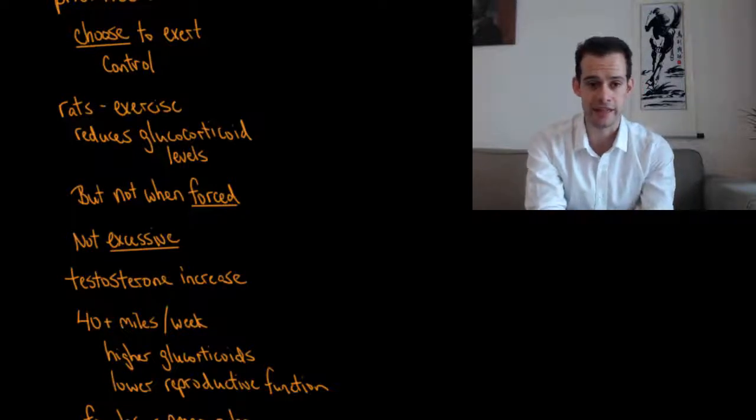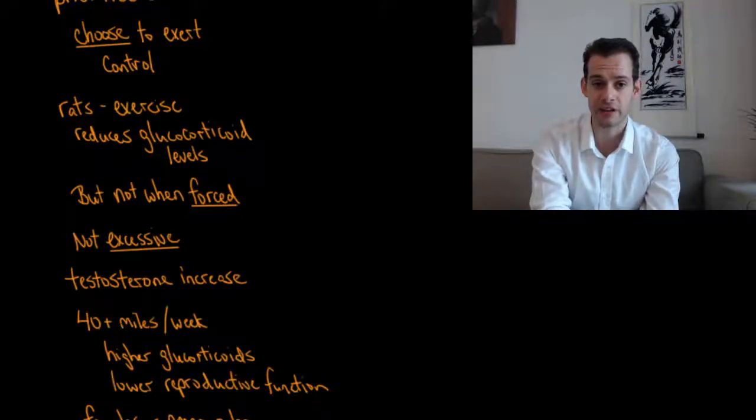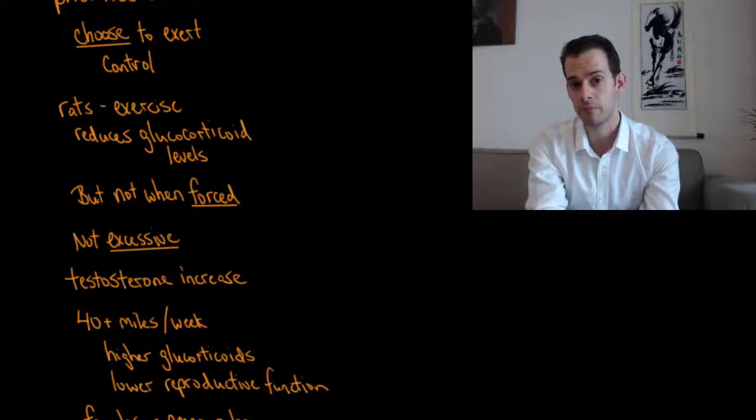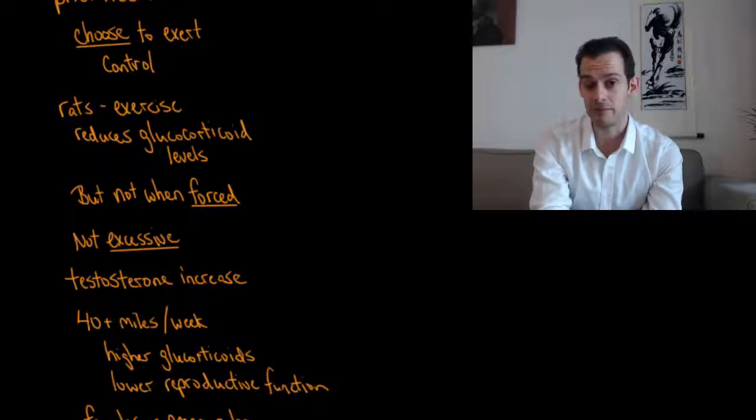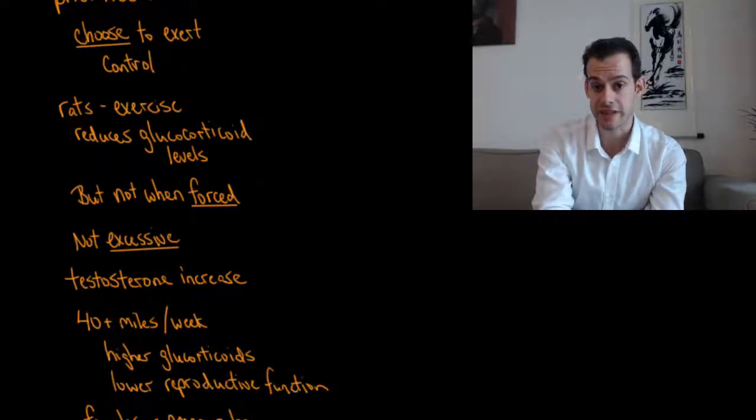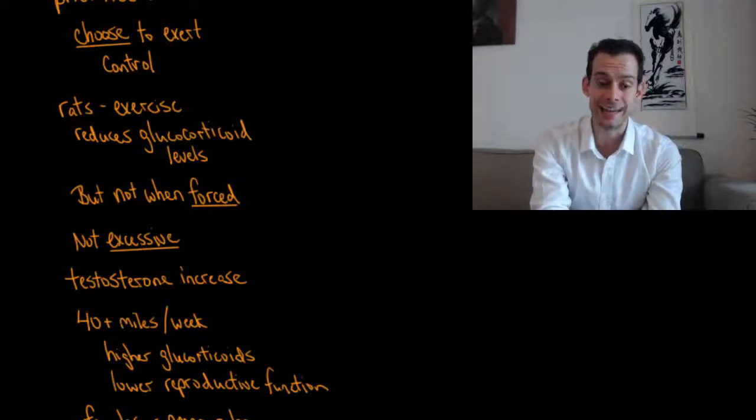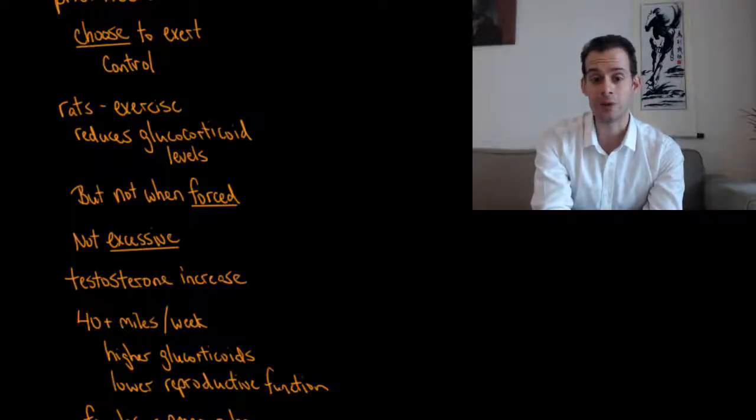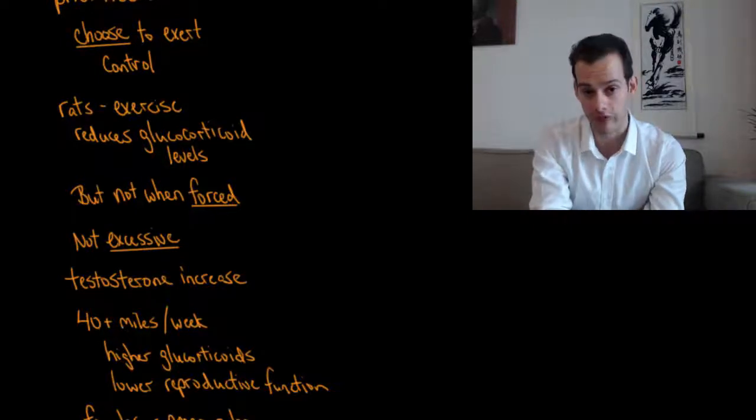It's important here that I say we choose to exert control. We choose to exercise. In rats, we can see that exercise can reduce levels of glucocorticoids, those stress hormones. But this isn't the case if the rats are forced to exercise. You can give a rat a wheel, they can choose to run, and you can see how much time they spend exercising. This is associated with reduced glucocorticoid levels. But then you take another rat and you force it to do the same amount of exercise. When you do this, you can actually see increases in stress in the rat that was forced to exercise and elevated levels of glucocorticoids.